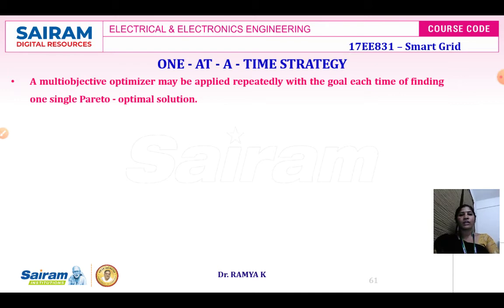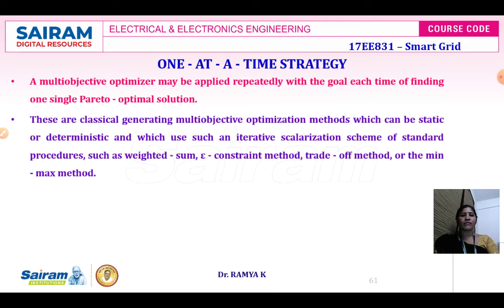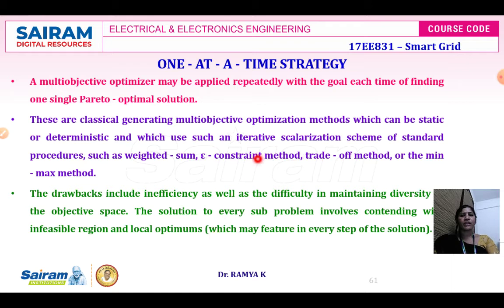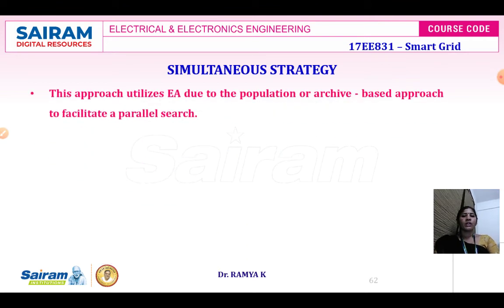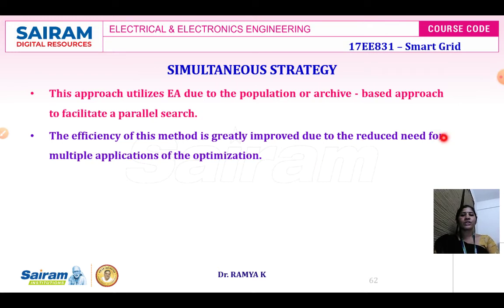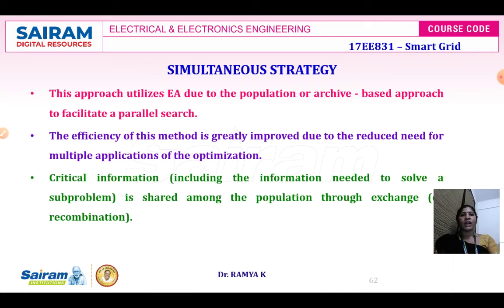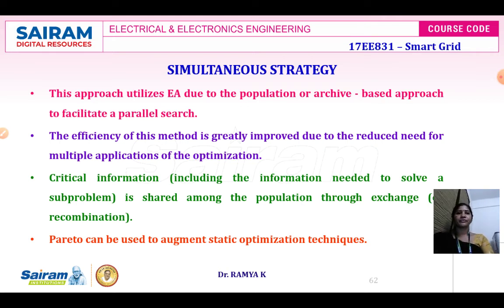The solution for each problem involves contending with infeasible regions and local optima. To overcome this drawback, the simultaneous strategy utilizes evolutionary algorithms (EA) due to the population-based approach, facilitating parallel search. The efficiency in this method is greatly improved due to the reduced need for multiple applications of optimization. Critical information is shared among the population through exchanges, and Pareto can be used as an argument in static optimization techniques.